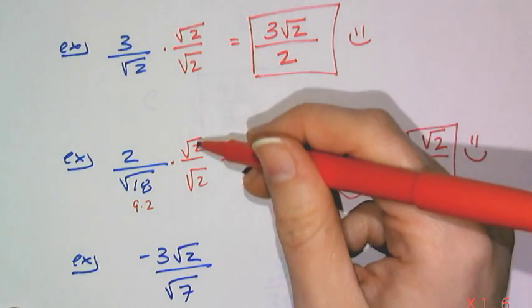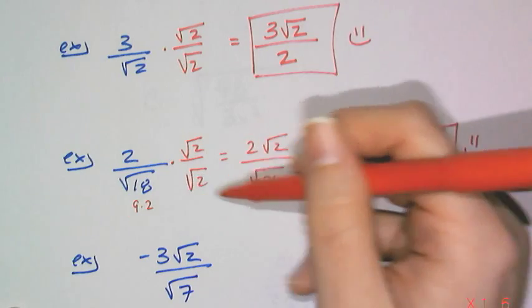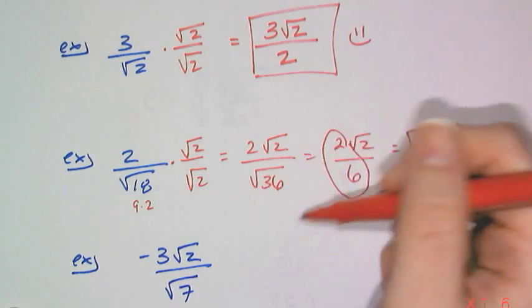I just wanted to show you that you didn't have to necessarily multiply it by the denominator. You just have to get the denominator to be a perfect square.